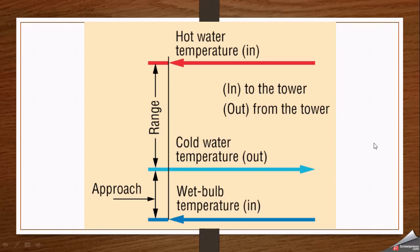This diagram shows the difference between approach and range. The red line shows the hot water temperature — the inlet water of the cooling tower — which then passes through the cooling tower and produces cold water at the outlet. This cold water goes back into the system. The difference between the inlet and outlet temperatures is called range.